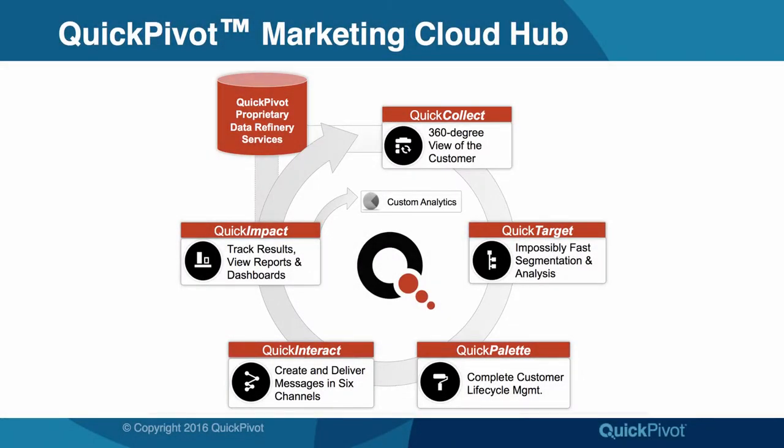The QuickPivot Marketing Cloud contains five fully integrated modules. This short video covers the basics of the QuickTarget module, where better customer targeting leads to better results.